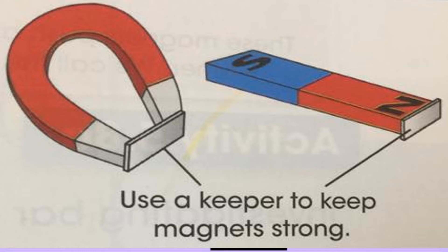When you have magnets, you should keep them safe because their magnetism can sometimes be lost or spread. We need to keep them safe. We should always put a keeper on them. The keeper is a metal piece that you attach to the mouth of the magnet, and it will preserve their magnetism.